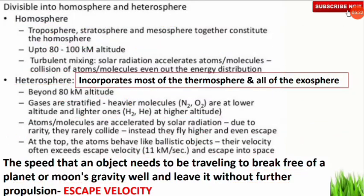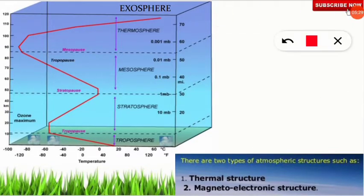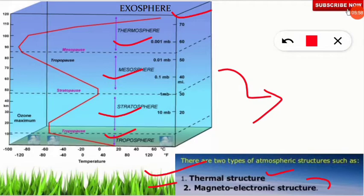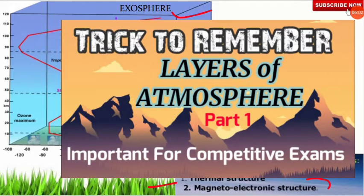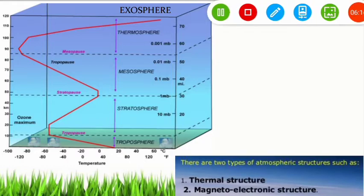The atmosphere is classified based on two categories: thermal structure — which divides it into troposphere, stratosphere, mesosphere, thermosphere, and exosphere — and magneto-electronic structure. The thermal structure will be discussed in the next video. Today we focus on the magneto-electronic structure and the classification of the atmosphere based on the behavior and number of free electrons and other charged particles.